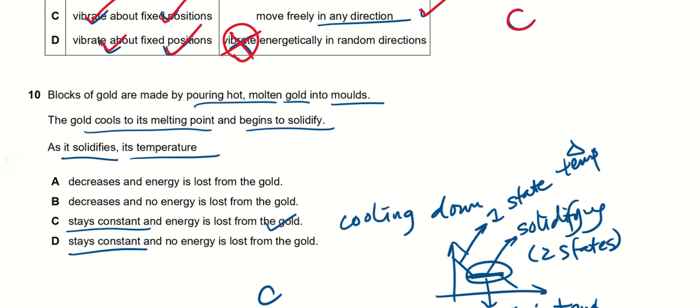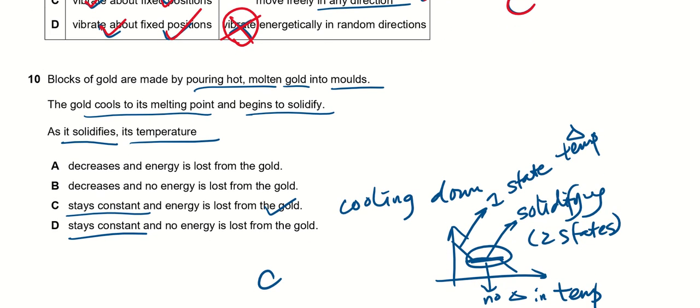Now blocks of gold are made by pouring hot molten gold into molds, and it cools to its melting point and begins to solidify. So there's no change in temperature, because when there's a change in state, there's no change in temperature. As it solidifies, as it's changing state, its temperature will actually stay constant.